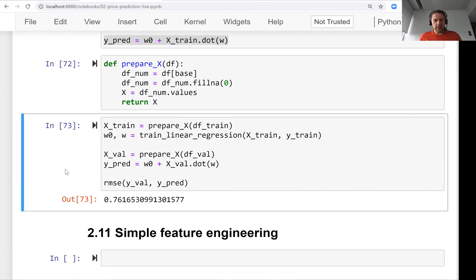Okay, now we have a way of evaluating the quality of our model using root mean squared error. We can do this on the validation dataset, and now we can work on improving the model. This is what we will do next.